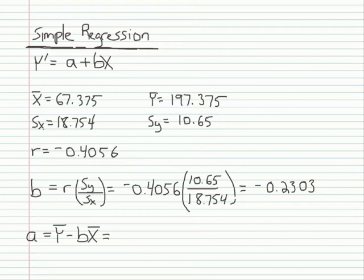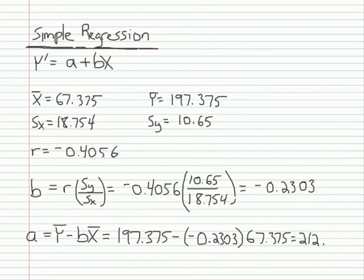Now that we have the slope, we can compute the intercept, and that's going to be the mean of y, which is 197.375, minus the slope—negative 0.2303—times the mean of x, which is 67.375. And with that we get 212.8915.